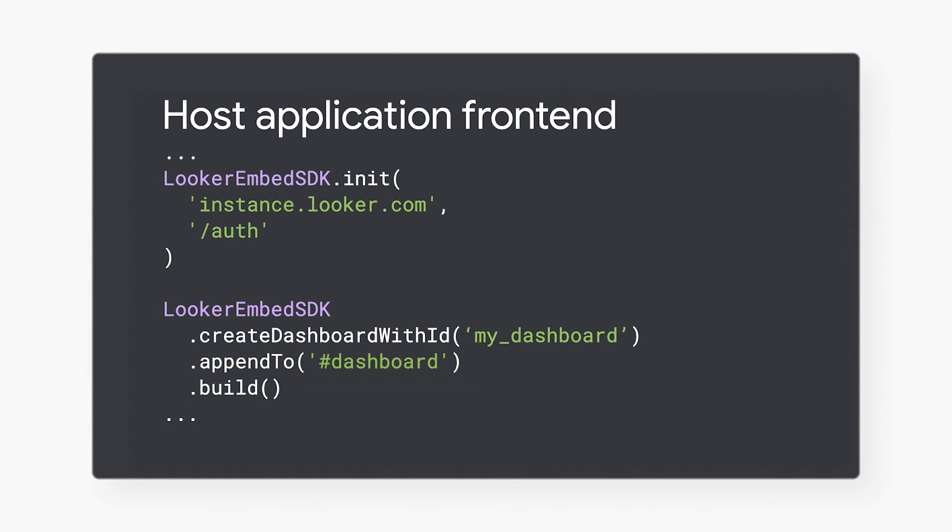Now your host application frontend has an iframe pointing to the SSO embed URL. In addition, we provide code samples linked below to help your host application backend call the Create Embed SSO URL API endpoint. Keep in mind, the Embed SDK can do much more than what we've covered. You can discover more Embed SDK functionality in its repository — links below.